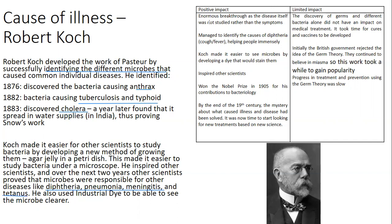Robert Koch received the medical Nobel Prize for his work with bacteria. Positives: a significant breakthrough because the disease was studied rather than the symptoms; he made it easier to see microbes by developing a dye that would stain them; he inspired other scientists; he won a Nobel Prize for his contributions to bacteriology. However, the limited impact is that just discovering the germs that cause an illness doesn't directly help with medical treatment — it does take time for cures and vaccines to be developed. Originally, the British government rejected the idea of germ theory, so his work, although more scientifically proven, took a little bit longer to gain popularity.